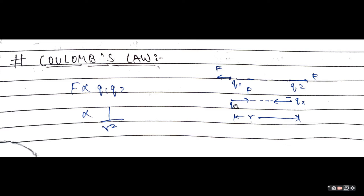अब इन दोनों charges के बीच में distance है R। According to Coulomb's Law, जो इनके बीच का force होता है वो directly proportional होता है Q1 और Q2 के product के, और inversely proportional होता है उनके distance के square के। अब हम आगे देखते हैं कि Coulomb's Law में और क्या होता है।